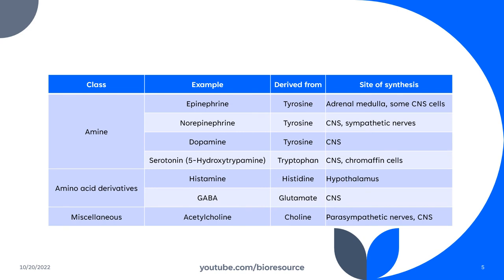The next class includes amino acid derivatives. Histamine is derived from histidine and the site of synthesis is the hypothalamus. GABA is derived from glutamate and the site of synthesis is the central nervous system. Another class includes acetylcholine, which is derived from choline, and the site of synthesis is the parasympathetic nerves and the central nervous system.